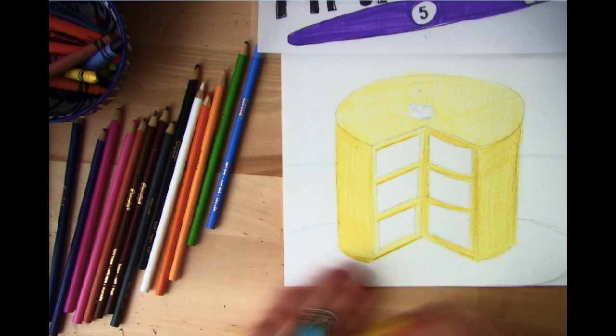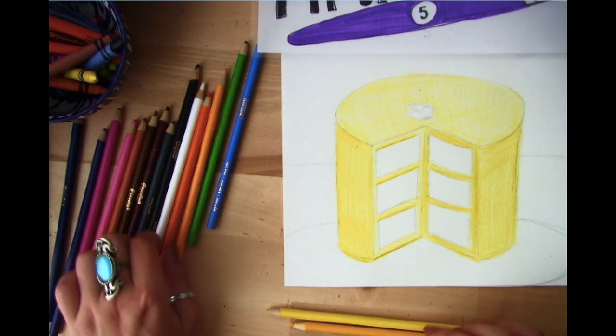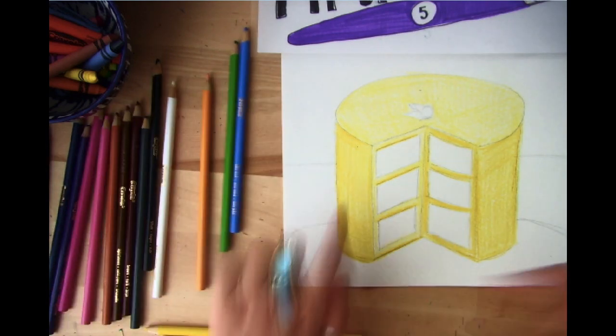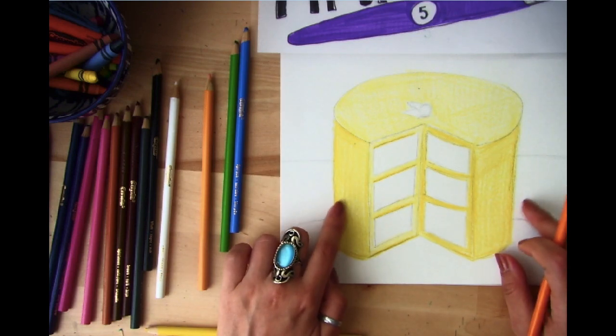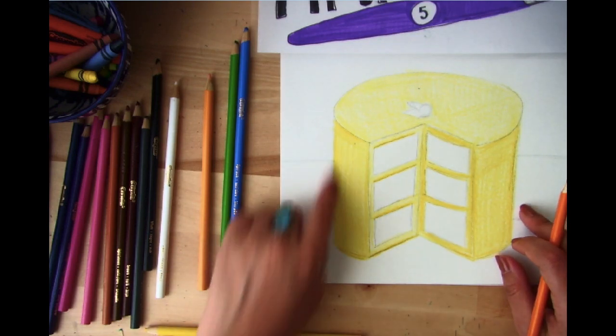Remember, analogous colors. So I just used yellow. So the next color is going to be orange. And I want to deepen these sides a little bit more because this is where the shadow is casted.